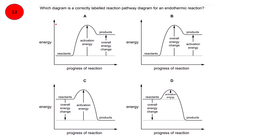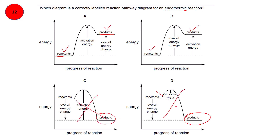Moving to the next question: which diagram is a correctly labeled reaction pathway diagram for an endothermic reaction? In an endothermic reaction, the energy of products is higher than the energy of reactants because energy is absorbed. Option B is also correct for the energies of reactants and products, but here the energy of the product is lower, so B cannot be correct. Similarly, option D cannot be correct.